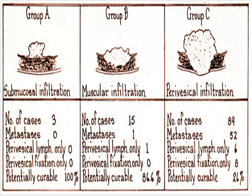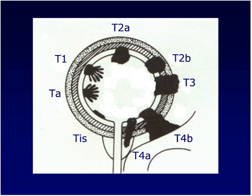I'd like to start with a little bit of history. This is a landmark observation made by Jewett and Strong in 1946. Only about 50 to 60 years ago were we learning the different stages of bladder cancer. What Jewett demonstrated is that with increasing depth of invasion of tumors, you had a higher risk of regional and distant metastasis. This was the first observation and ultimately was the basis of all staging of bladder cancer. Now we have more elegant ways of determining pathological stage, and our GU pathologists assist us in determining the appropriate stage.